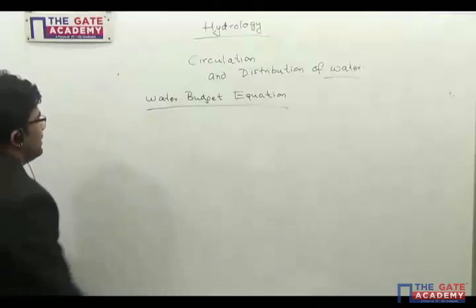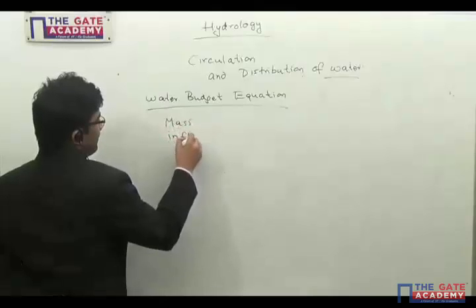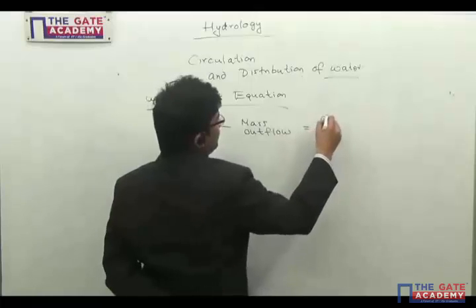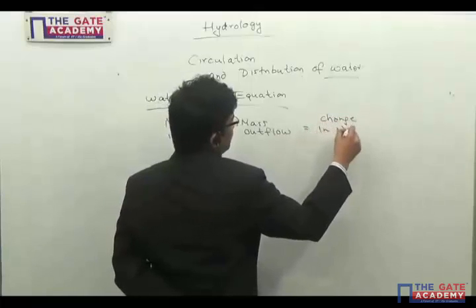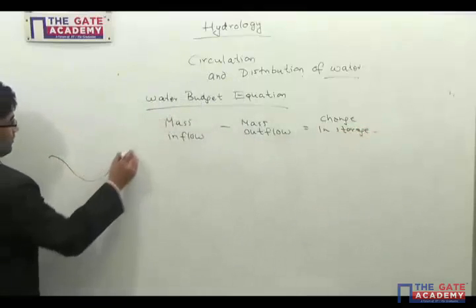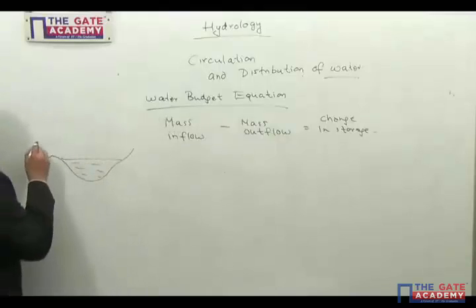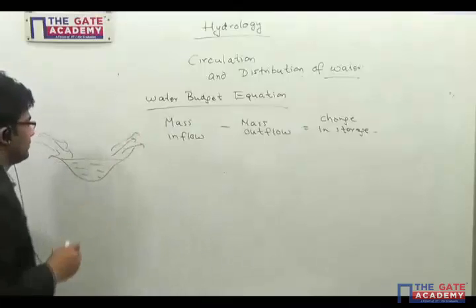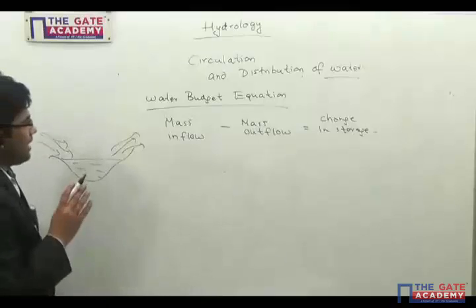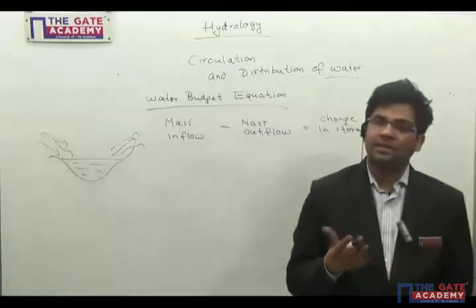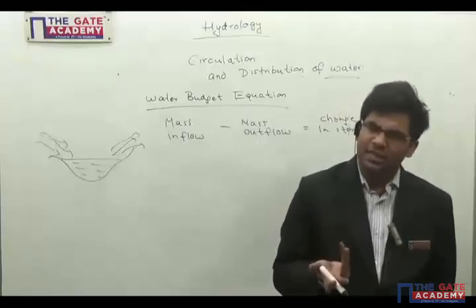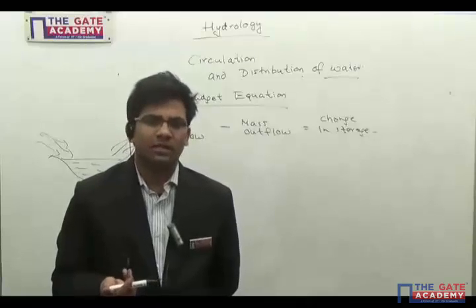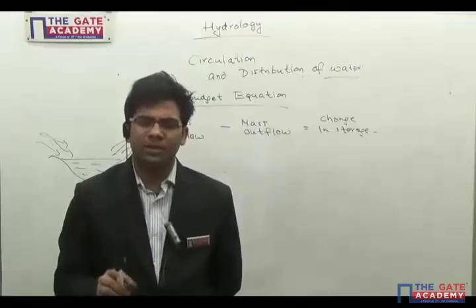The water budget equation states that mass inflow minus mass outflow is equal to the change in storage. Suppose we have a reservoir — some amount of water will come in and some amount will go out. So mass inflow minus mass outflow gives us the change in the volume of water, that is the change in storage.